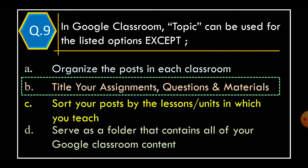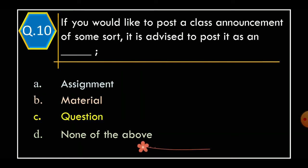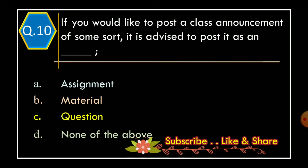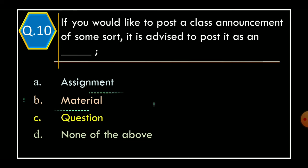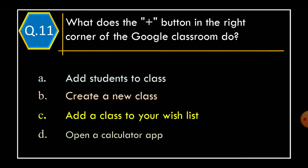Question 10: If you would like to post a class announcement of some sort, it is advised to post it as an — Option A: Assignment, Option B: Material, Option C: Question, Option D: None of the above. And correct option is Option B: Material.